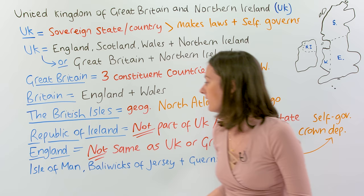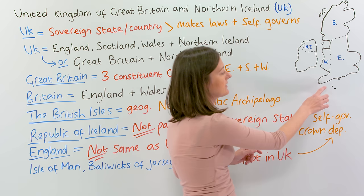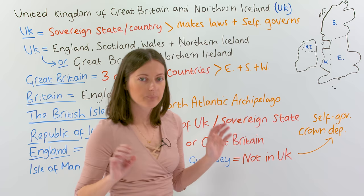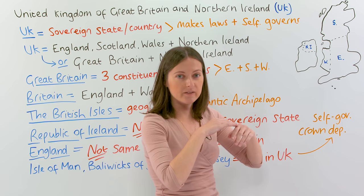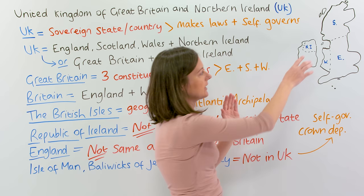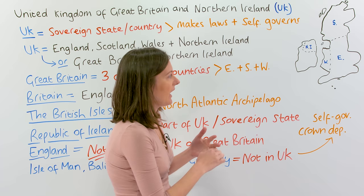Something I want to say about the Isle of Man and the Bailiwicks of Jersey and Guernsey — these islands are not part of the United Kingdom, but we have the same monarch. They have the same queen, but they're not part of the UK, and they can make their own laws and govern themselves. The laws are different — they run themselves one way, and in the Isle of Man, they run themselves in another way.